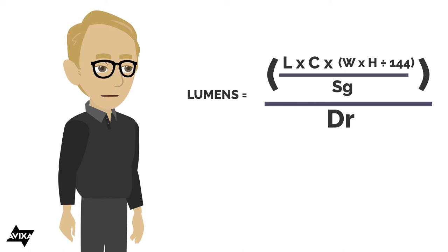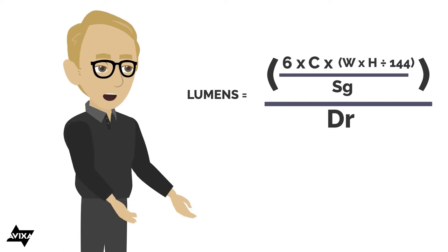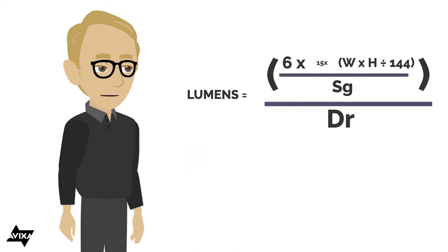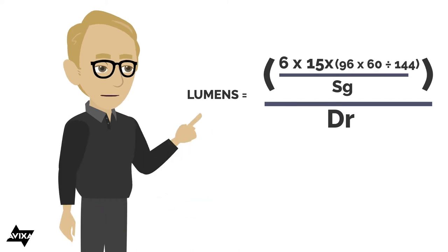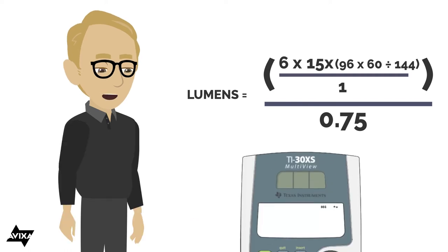So let's put some numbers to this. We say the ambient light was six foot candles. The desired contrast ratio was 15 to one times, we said it was 96 wide by 60 tall, divide that by 144. We said it was a matte white, so that would be a screen gain of one, divided by the derating percentage of 0.75. Let's enter all that into our calculator. Six times 15 times, open up the paren, 96 times 60, divided by 144, close the paren, divided by 1, divided by 0.75. Hit the enter key and there we go again, 4800 lumens or practically speaking, a 5000 lumen projector typically.